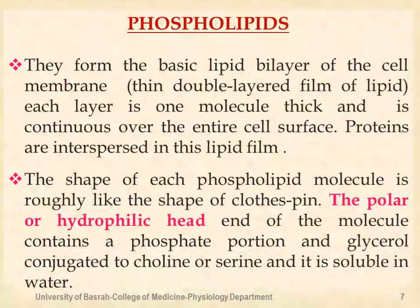The phospholipids form the basic lipid bilayer of the cell membrane — a thin double layer of lipid, each layer one molecule thick, continuous over the entire cell surface. Proteins are interspersed in this lipid film. The shape of each phospholipid molecule is roughly like a clothespin.